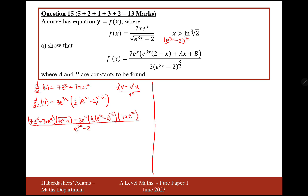All over e to the 3x minus 2, because the bottom function gets squared. Looking at what we've got so far and what we want the form of our answer to be — looking at the denominator first — we need an extra half power of e to the 3x minus 2 and an extra multiple of 2. I've noticed that will perfectly cancel out a term on the numerator, so I'm going to multiply by 2 brackets e to the 3x minus 2 to the power of a half on both the numerator and the denominator.